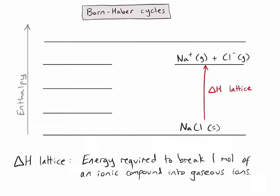If this is the value we are trying to calculate using Hess's law, we are going to have to find an alternative pathway using steps between the other lines in the enthalpy diagram in order to eventually calculate the lattice enthalpy.